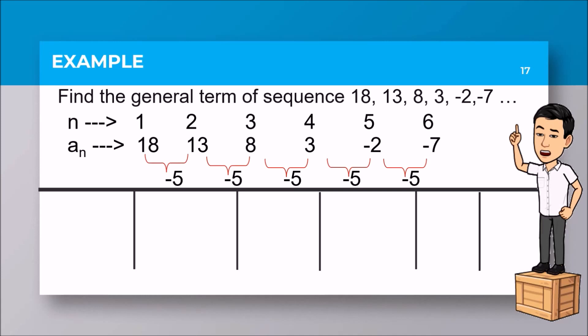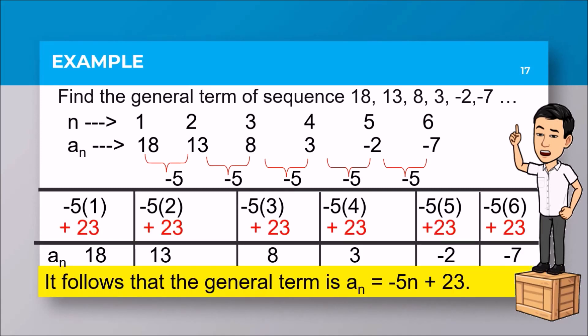So negative 5 will be used to multiply with those values of n, which are 1, 2, 3, 4, 5, and so on. Think of a number to be added with the result of those negative 5 times 1, negative 5 times 2, to come up with the original 18, 13, 8. By analysis, you will be needing 23, or plus 23, to come up with this a sub n. Just keep practicing - I guess you can analyze that finding the general term is not that very hard. So the general term of this problem is a sub n equals negative 5n plus 23.